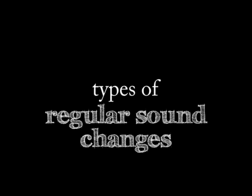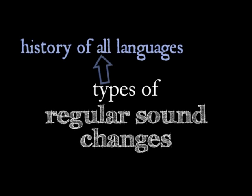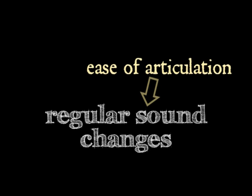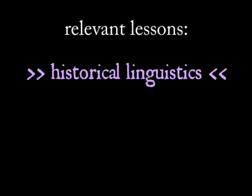Instead, the topic of regular sound change will be the order of the day. This series will look at the various types of regular pronunciation change that are common to languages around the world, be they foreign languages like Japanese and Arabic or native ones like English. We'll also see how these changes very often make combinations of sounds easier to pronounce — in other words, one of the key motivations for speakers to change a sound is ease of articulation.